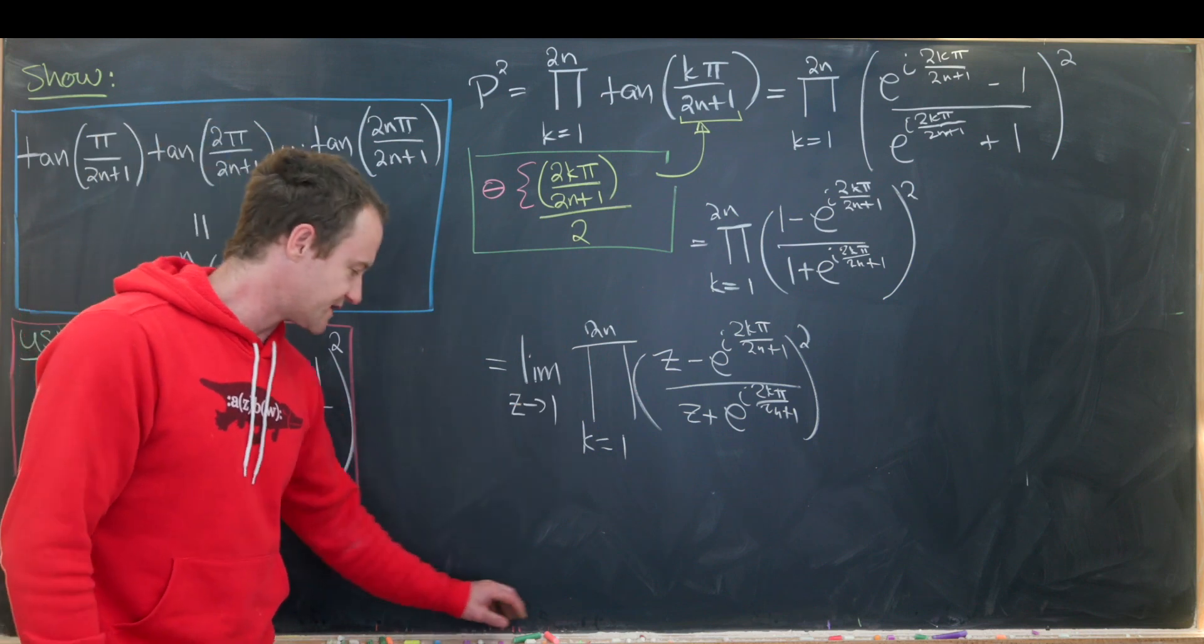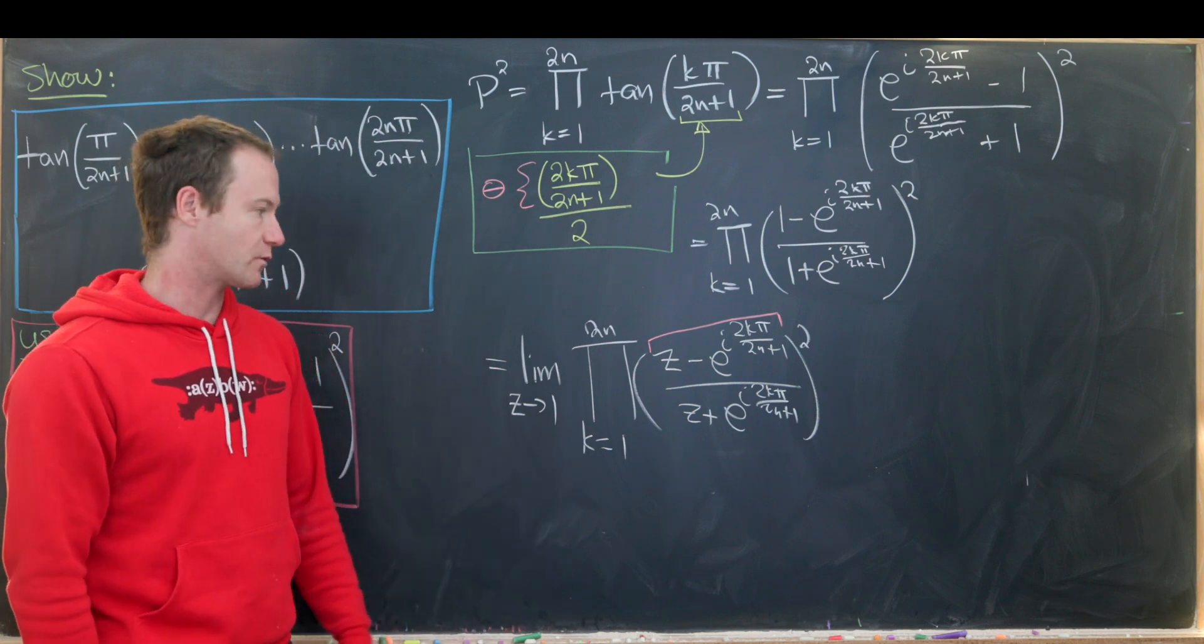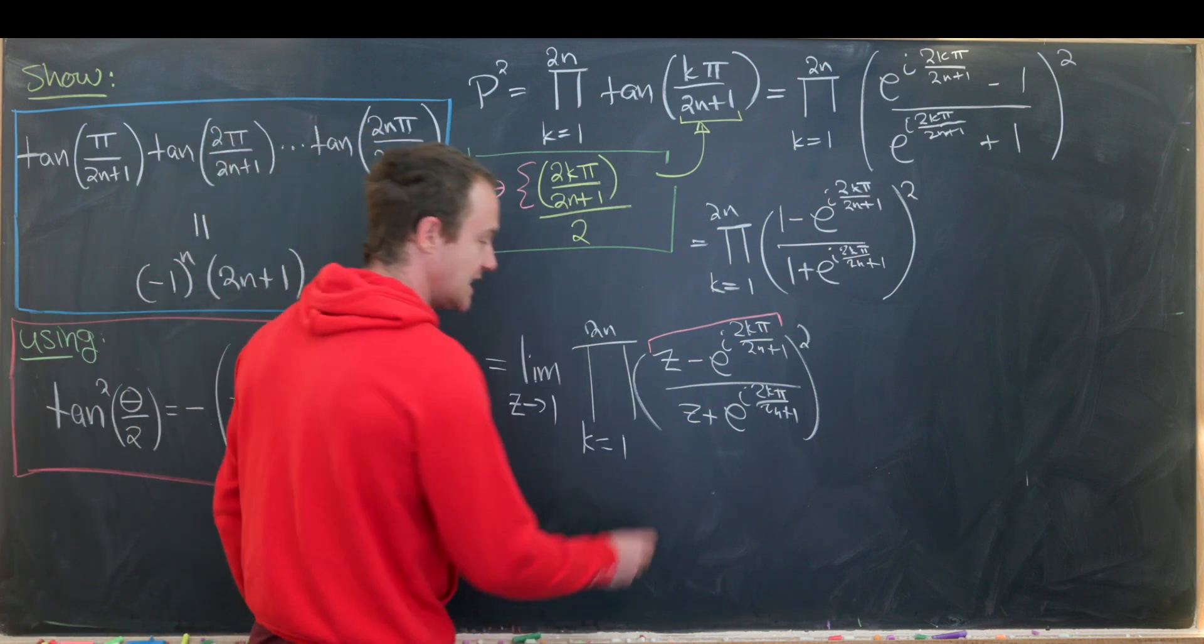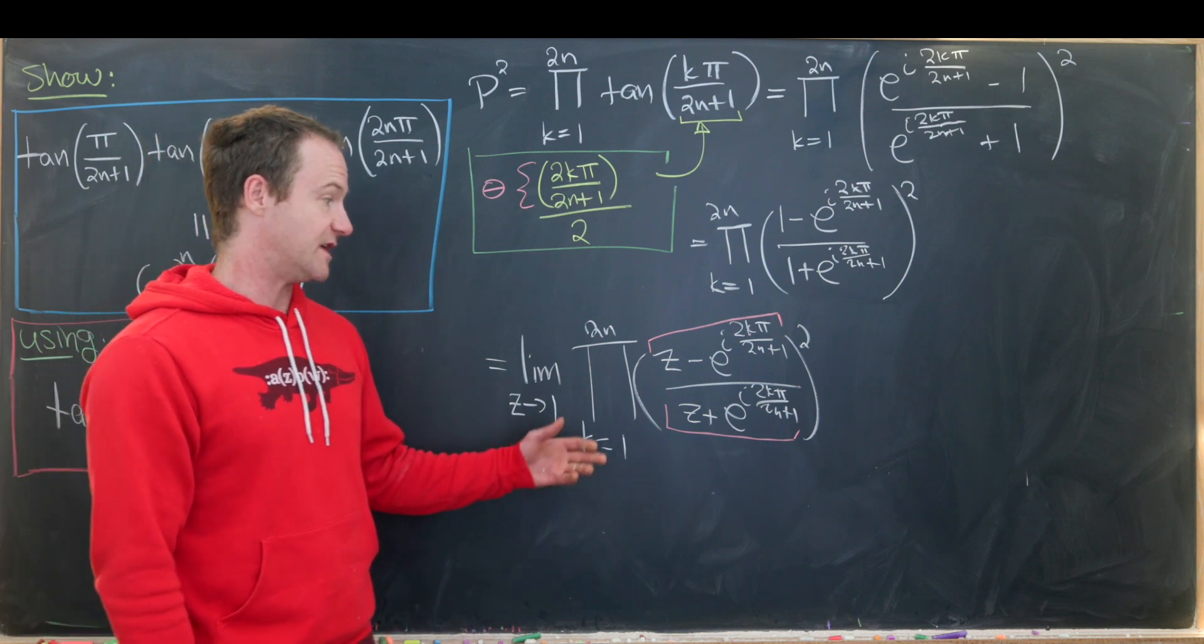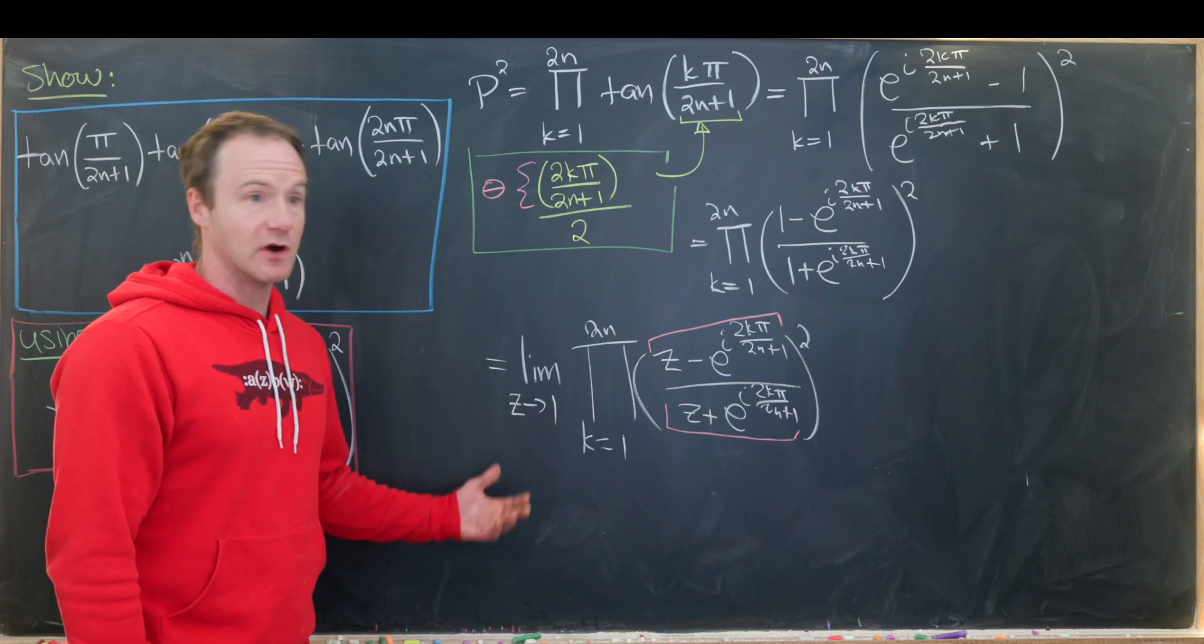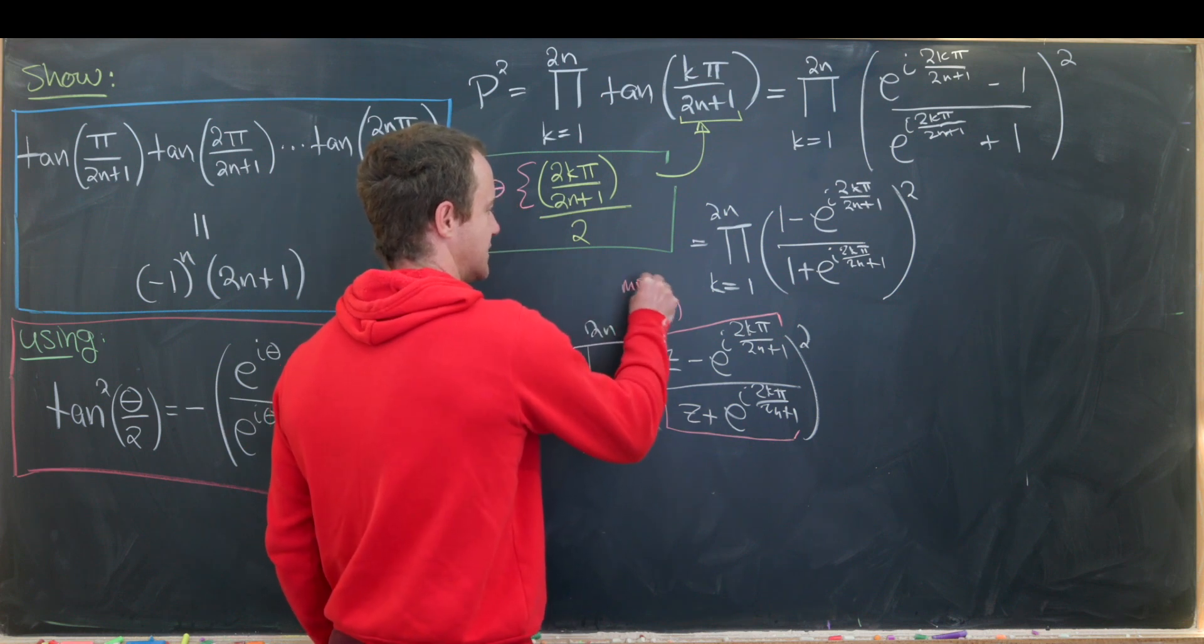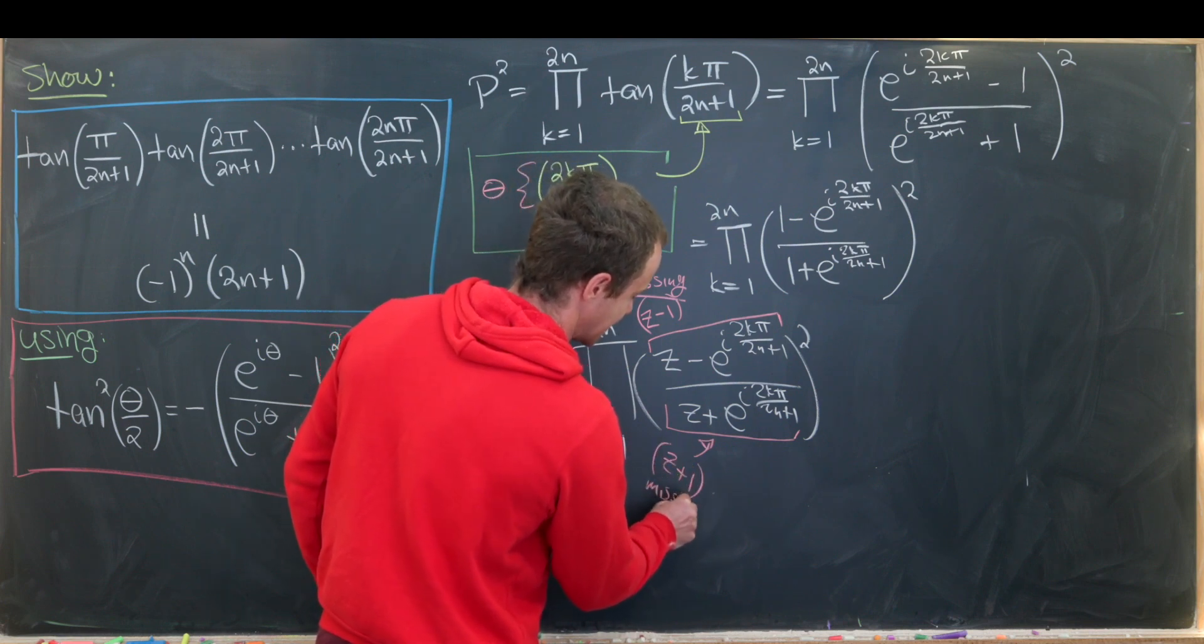Okay but now let's notice that here we're taking the product over all 2n plus 1 roots of unity except the one that corresponds to k equals 0 which is the z equals 1 term. And here we're taking the product of all of the odd roots of the 4n plus 2 roots of unity except for the one corresponding to k equals 0 which would be negative 1 here. Okay so let's just point out that here we're missing a z minus 1 term. And then here we're missing a z plus 1 term.